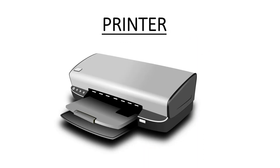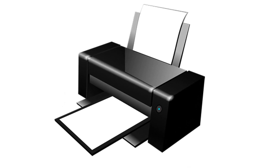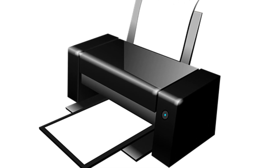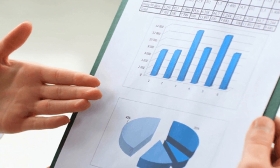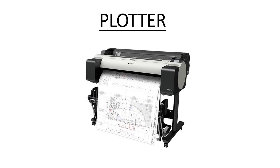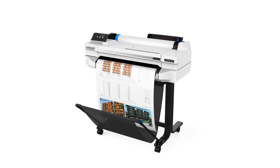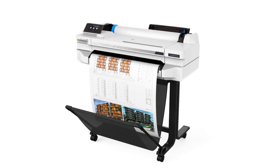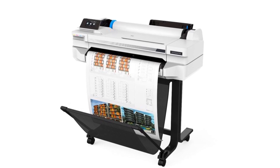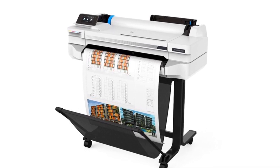Printer. A printer is used to print text or pictures on paper. It can print both in black and white, or color. The printed copy on paper is called the hard copy. Plotter. A plotter is an output device much like a printer. Instead of toner, plotters use a pen, pencil, marker, or another writing tool to draw multiple continuous lines onto paper.